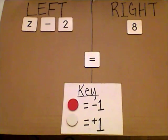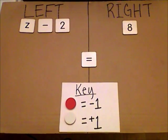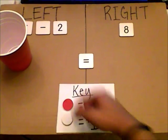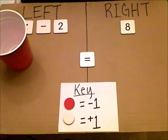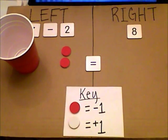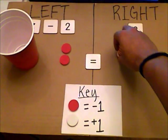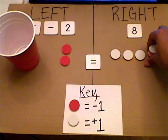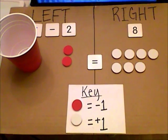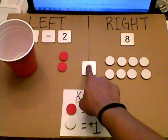Now I'm going to model a subtraction problem. The equation is z minus 2 equals 8. Just like before, I'll use a cup to represent the variable z. Since I have minus 2, I'll use the red side of the counters and put 2 red counters on the left. On the right I have positive 8, so I'll use 8 white counters on the right. So the equation is z minus 2 equals 8.